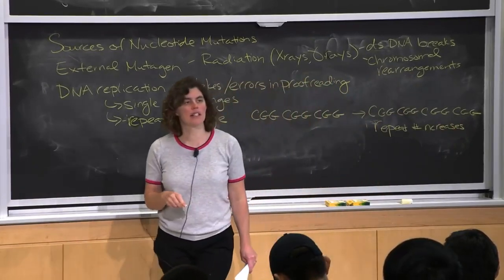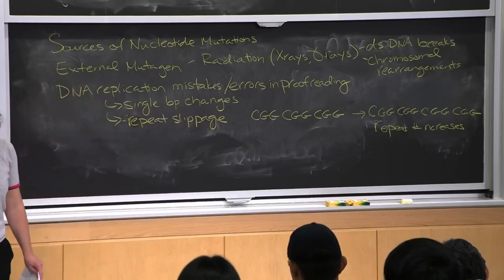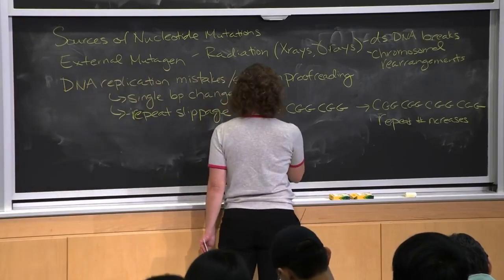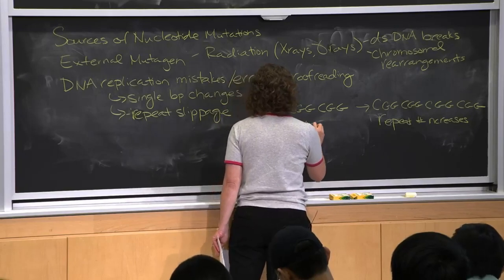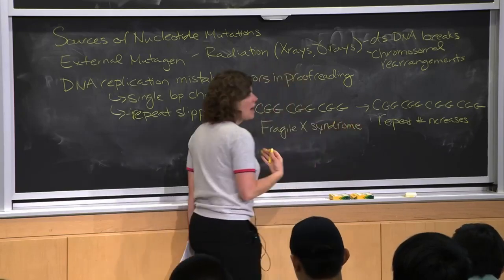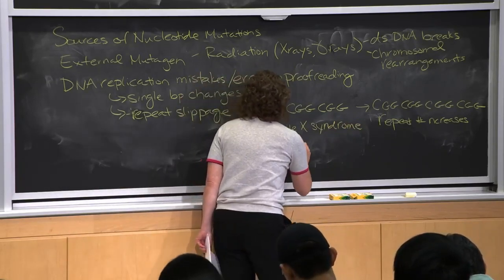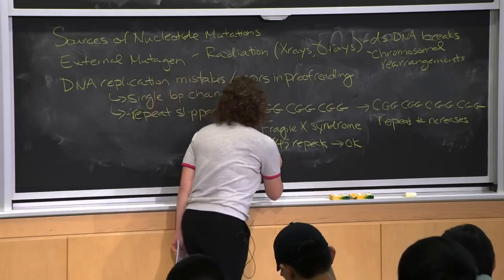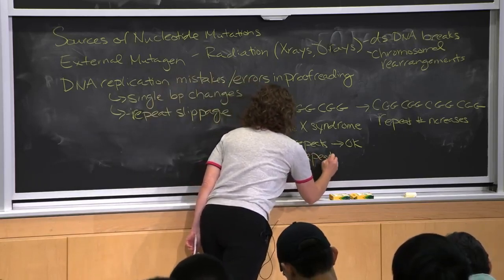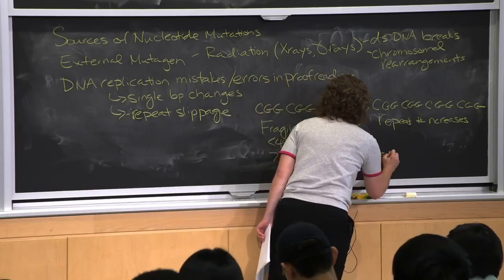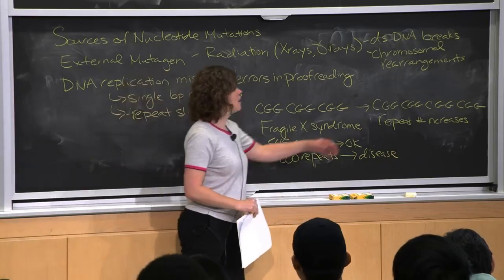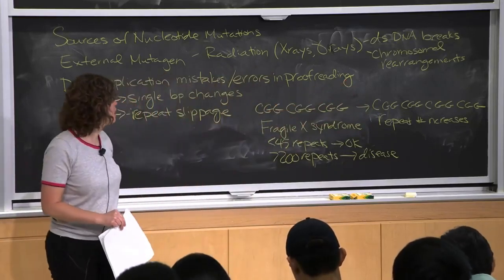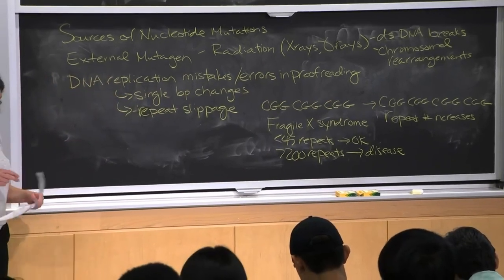Diseases like Huntington's disease and Fragile X syndrome are associated with the growing of repeat numbers. For Fragile X syndrome, if you have less than 45 repeats you're phenotypically normal, but if you have greater than 200 repeats you have the disease. That's because having these additional repeats leads to silencing of the gene next to them, called the FMR1 gene. A lot of these mistakes can come from DNA replication.